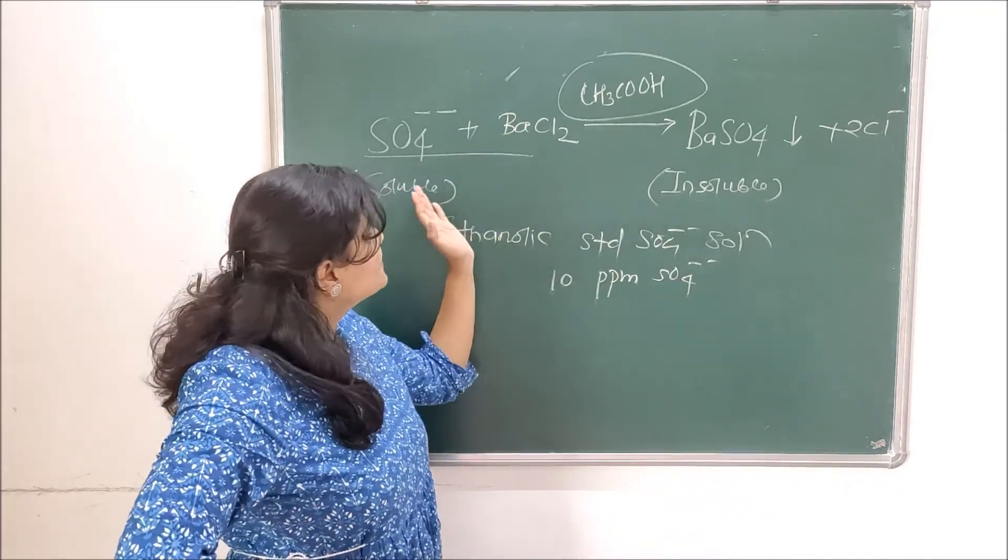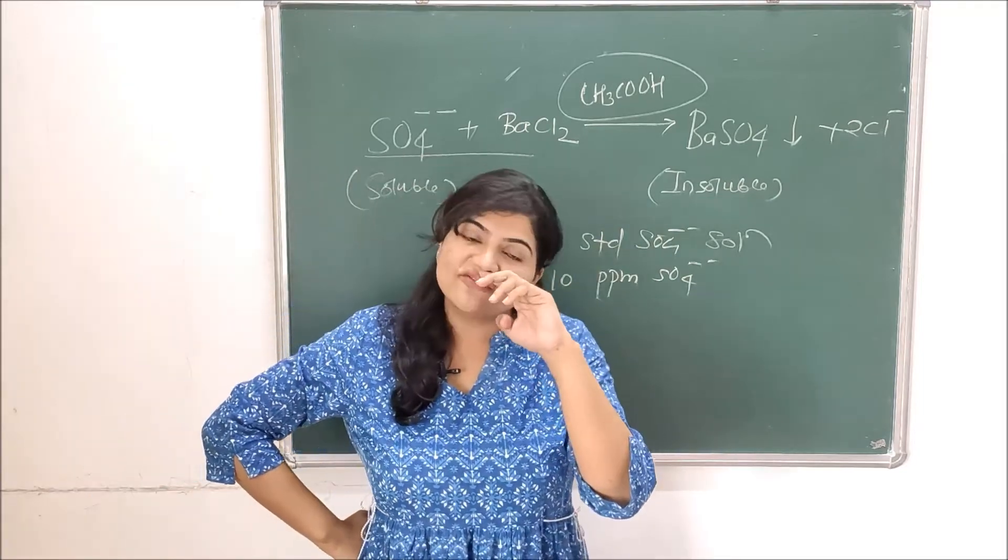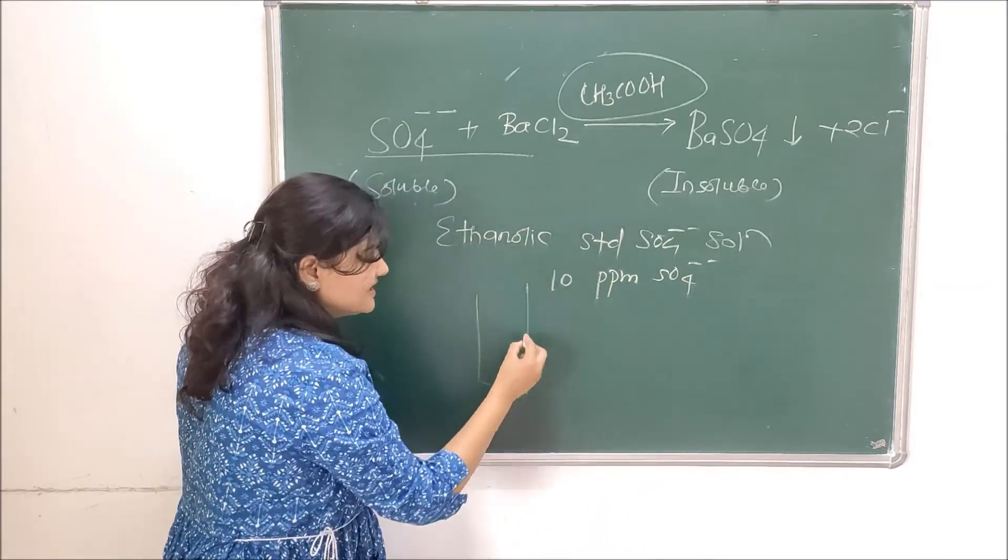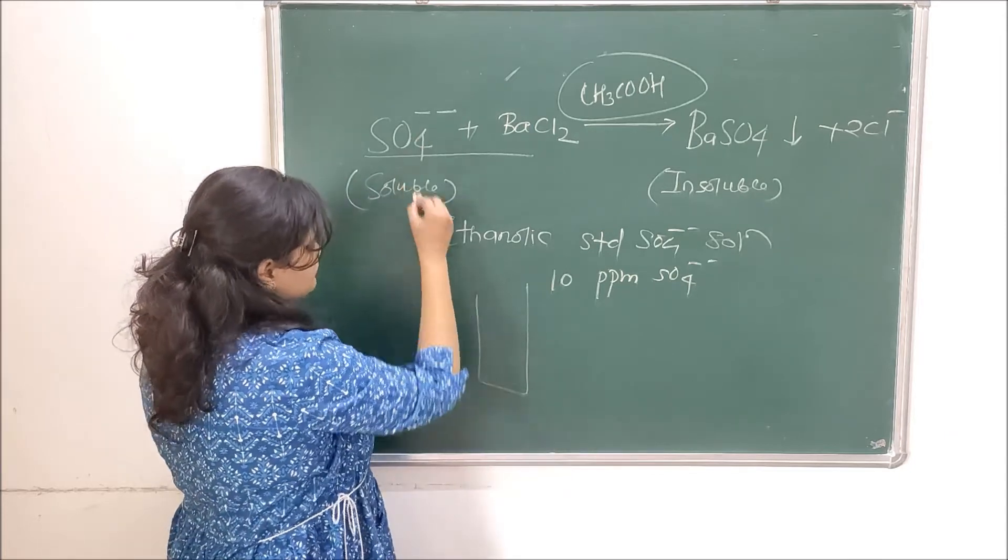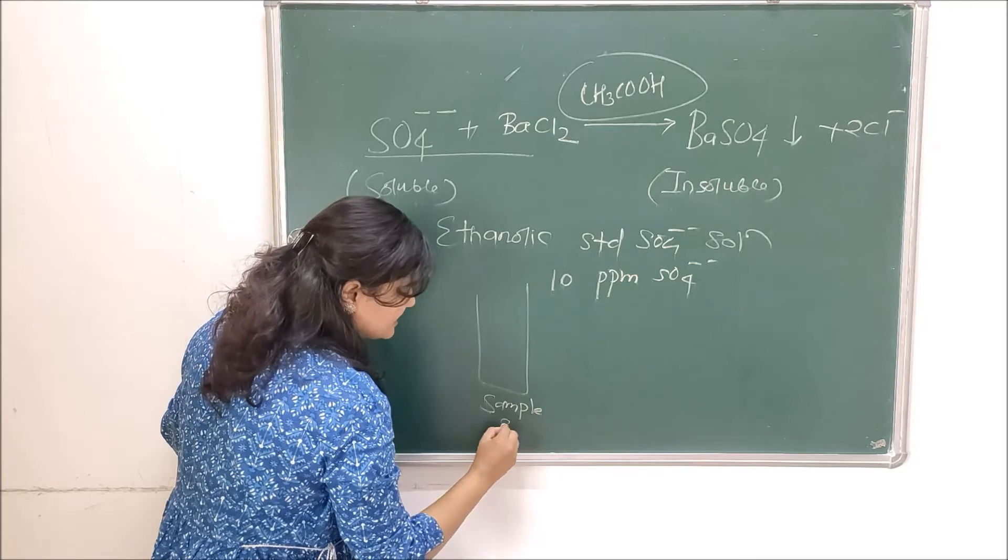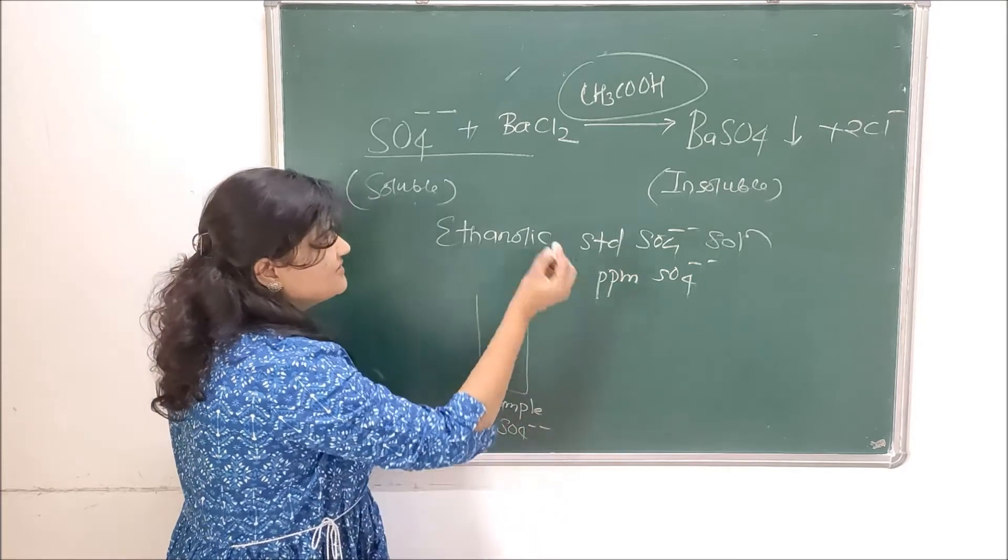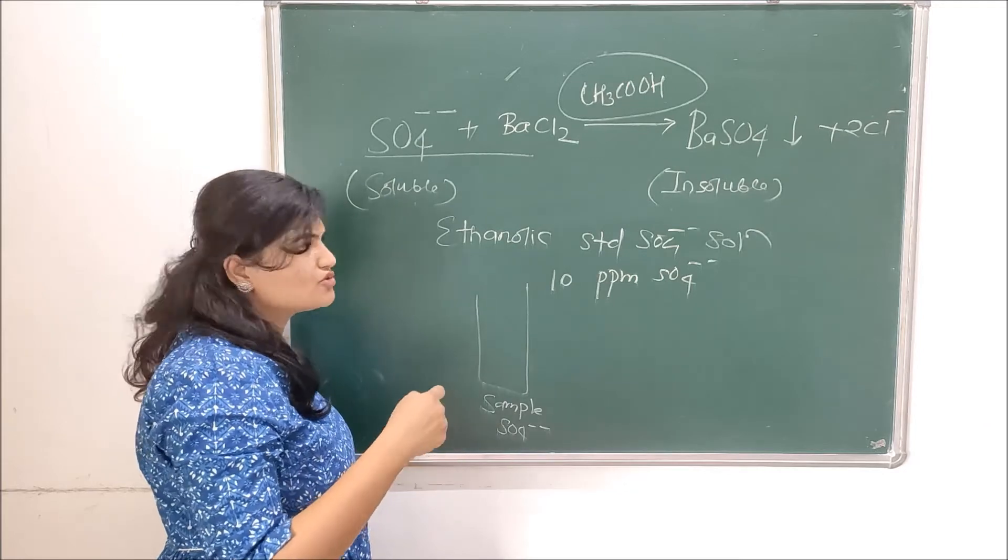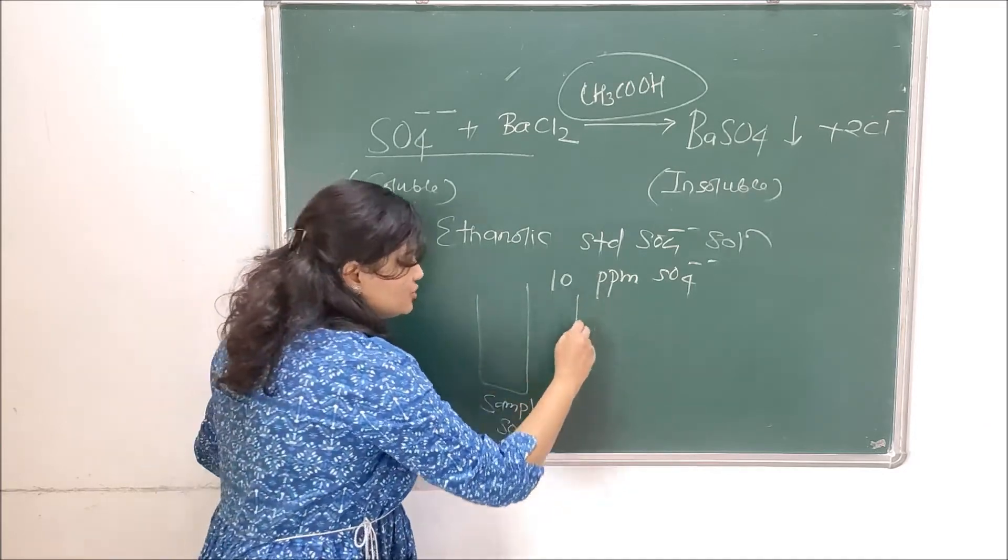So this is how the reaction goes on. Now in the sample nasal cylinder we will take our sample containing sulfate impurities and we will add barium chloride then acetic acid then ethanolic sulfate standard solution.